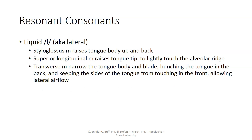For the liquid L, also called a lateral, the styloglossus helps raise the tongue body up and back. The superior longitudinal muscle raises the tongue tip, but unlike in a comparable stop, the tip only lightly touches the alveolar ridge so there isn't a complete closure. The transverse muscles help narrow the tongue body and blade, which both bunches the tongue in the back and keeps the sides of the tongue from touching in the front, allowing lateral airflow around the sides of the tongue.